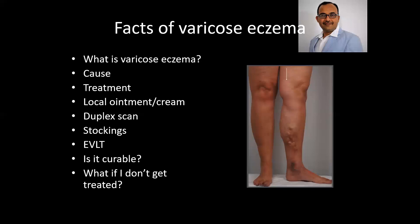Many patients ask me: what if I don't get treated? This is a very important question. There are six stages of varicose vein disease, and varicose eczema appears in the fourth stage. If you don't treat varicose eczema at this stage, then later on an infected ulcer will develop and the patient will suffer a lot. So whenever varicose eczema develops, it is already advanced varicose vein disease and it should be treated with endovenous thermal ablation and foam sclerotherapy.